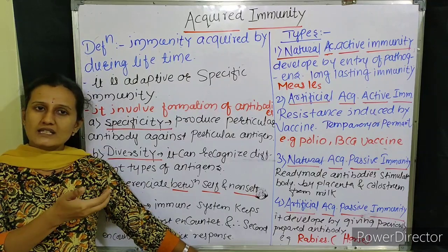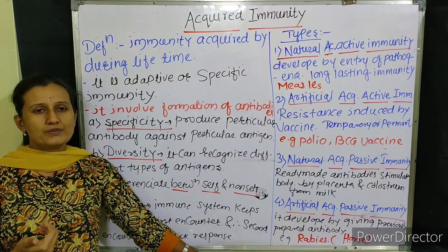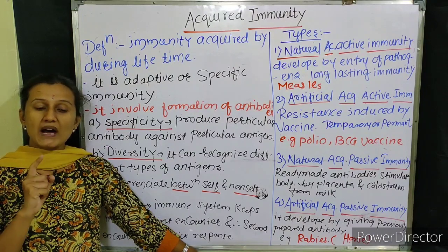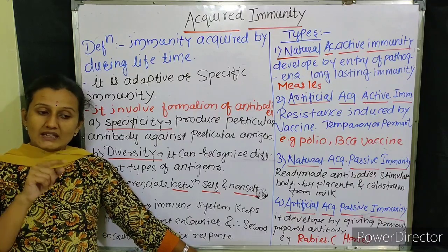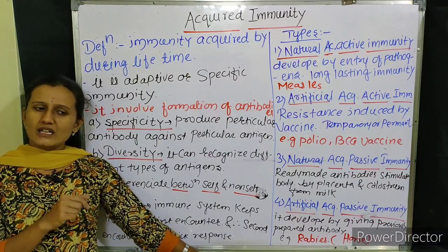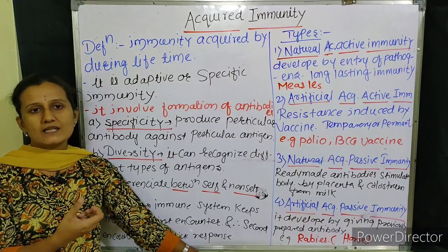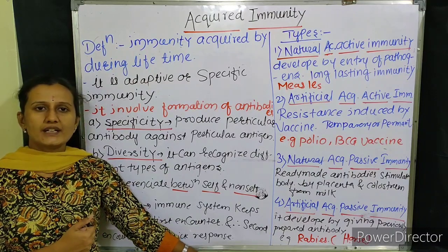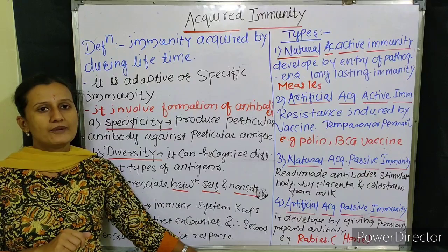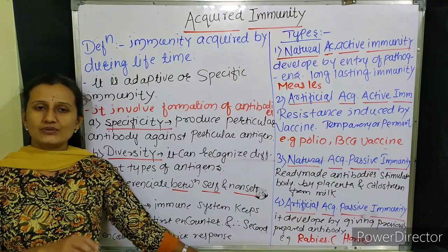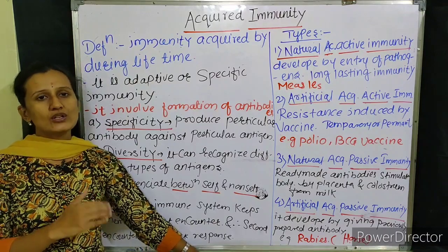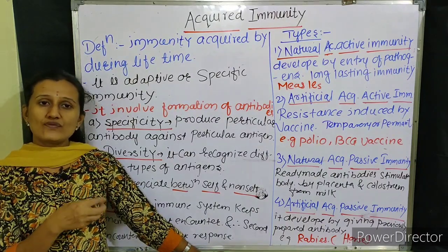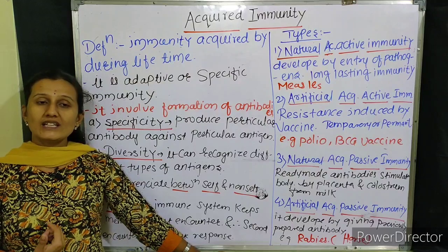When a skin graft from another person is placed on the patient's body, the acquired immunity recognizes it as non-self and tries to reject it. Similarly, when an organ like a kidney is transplanted — even from a close relative like a mother giving a kidney to her child — it is still a non-self molecule. Self molecules mean the body's own organs and molecules; non-self molecules come from outside, from another body, or from artificial implants like artificial valves. The body tends to reject these.